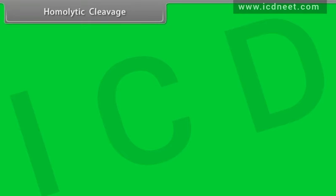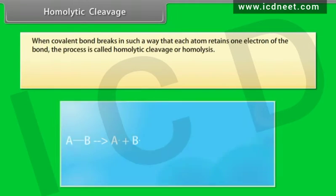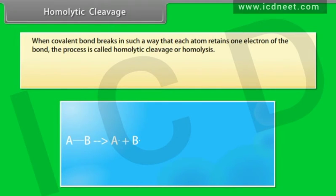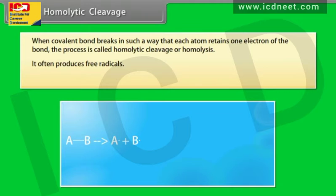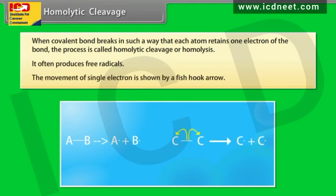Homolytic cleavage: when a covalent bond breaks in such a way that each atom retains one electron of the bond, the process is called homolytic cleavage or homolysis. It often produces free radicals, and the movement of a single electron is shown by a fishhook arrow.